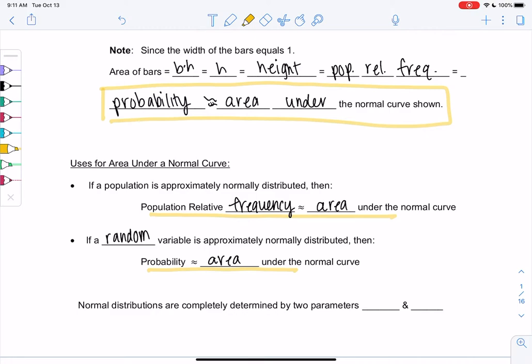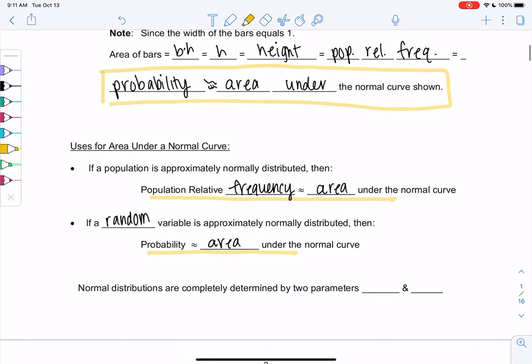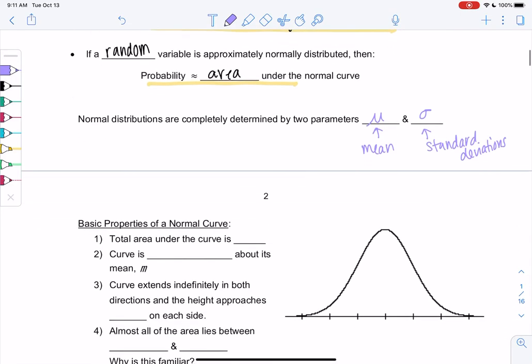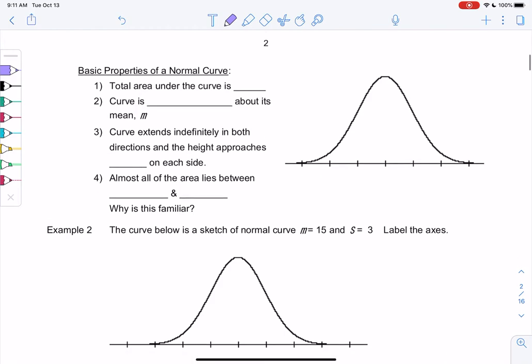And then we're going to have multiple versions of this normal curve. The two things we need to figure out, so the normal distributions are completely determined by two parameters, mu, the mean, and the standard deviation sigma. So we'll draw some normal curves together.